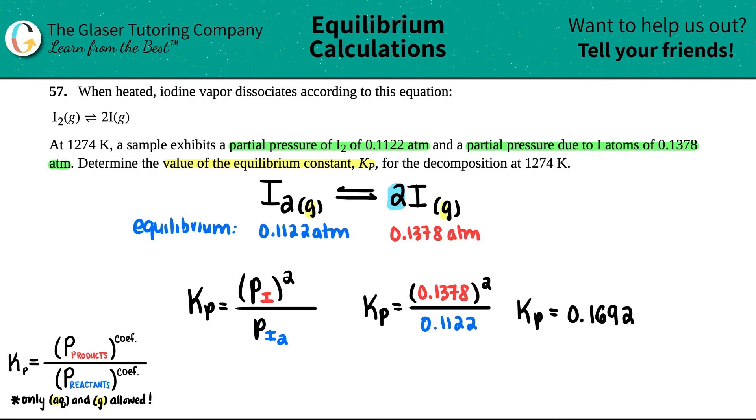Kp and Kc values are unitless, they have no units. So no units required, it's kind of like a ratio value. And we're done, that's the value of the equilibrium constant.